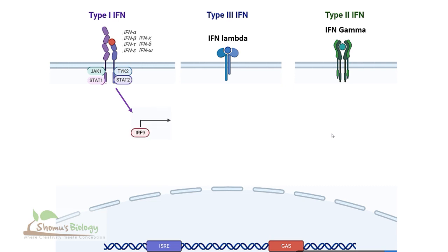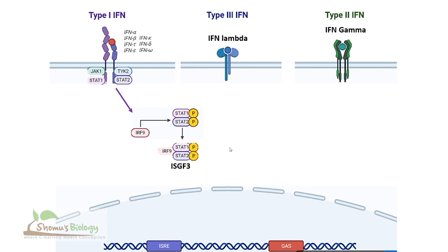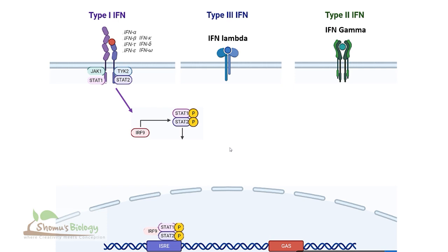IRF9, once active, is going to phosphorylate — or add a phosphate group to — the STAT1 and STAT2 dimer. The STAT1/STAT2 dimer, once phosphorylated by IRF9, will further associate with IRF9. IRF9 associated with phosphorylated STAT1 and STAT2 forms a complex known as ISGF3. ISGF3 can then go inside the nucleus and interact with the ISRE or interferon-stimulated response elements, turning on the transcription of ISGs — target genes that lead to cellular growth and proliferation.